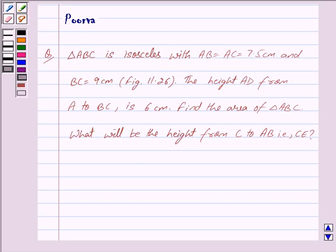Hi friends, I am Purva and today we will discuss the following question. Triangle ABC is isosceles with AB = AC = 7.5 cm and BC = 9 cm.